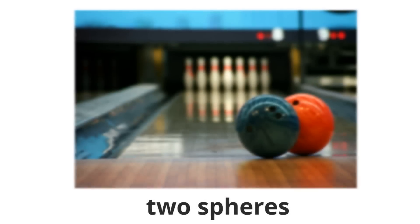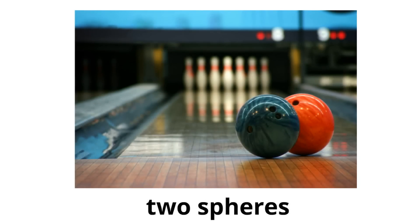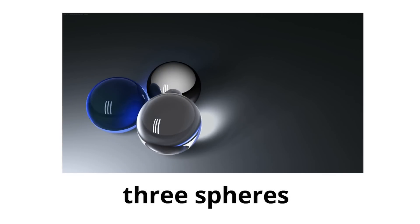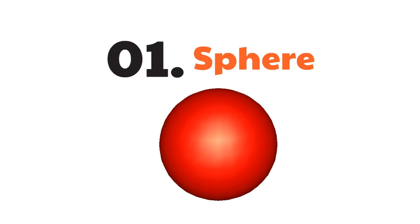In this picture we have two spheres — can you spot them? The two spheres are the two bowling balls, perfectly round. Here we have a group of three spheres — one, two, three spheres all together. The shape of a ball, a sphere, perfectly round. What a cool 3D shape to start with!